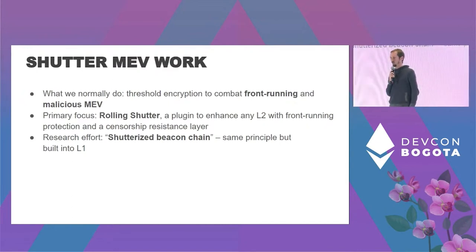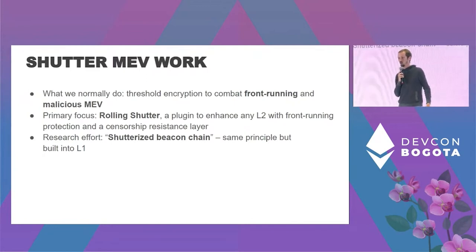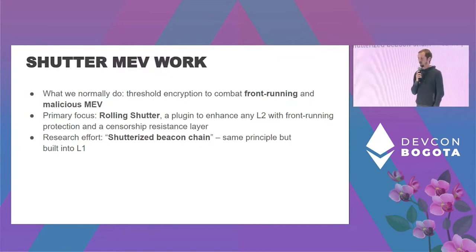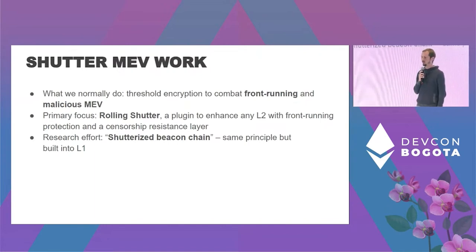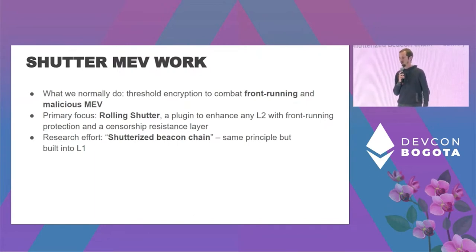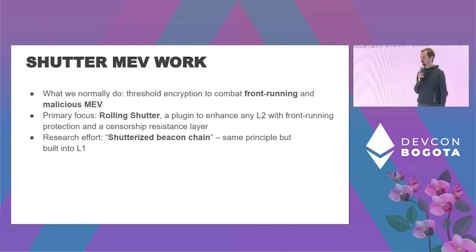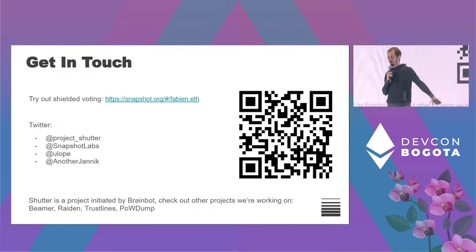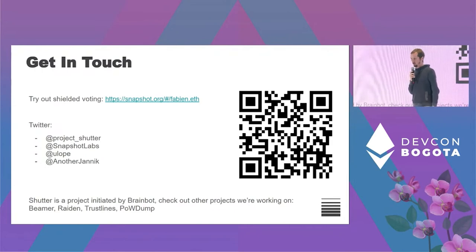We use this threshold encryption mechanism to prevent front-running and malicious MEV. Our main focus here is rollups — our product is called Rolling Shutter, which can integrate into rollups as a kind of plug-in. We're also looking at the beacon chain and L1s; for example, we have a beacon chain proposal but that's more on the research side.